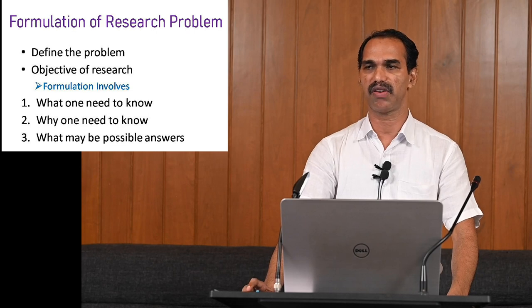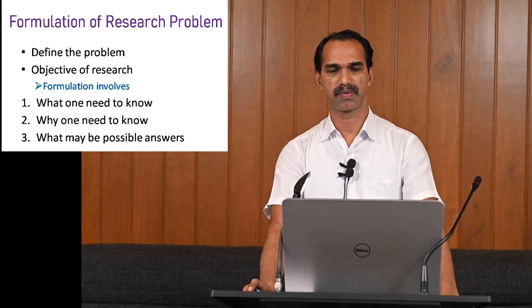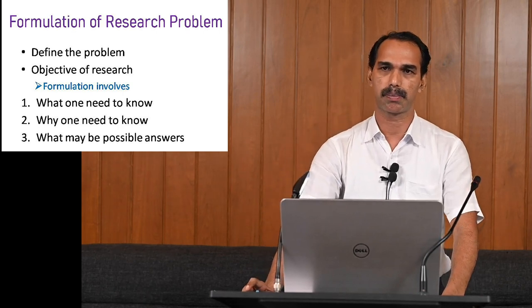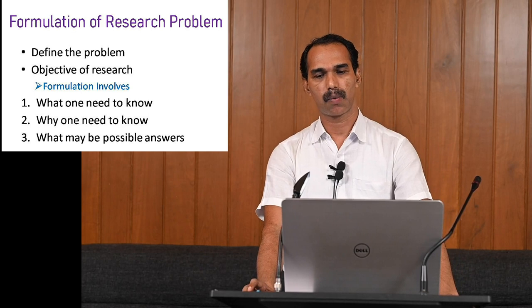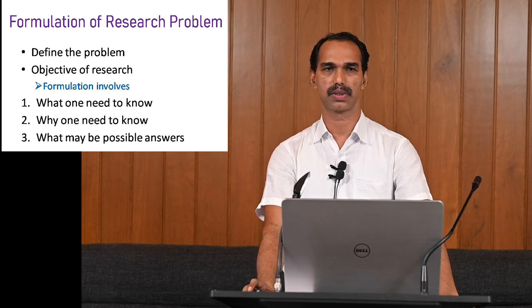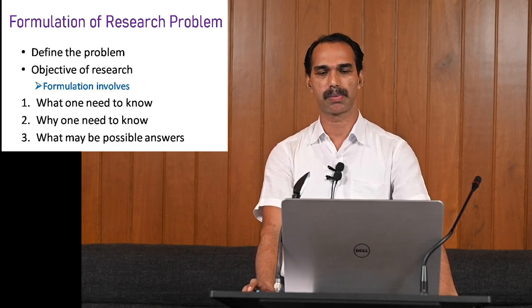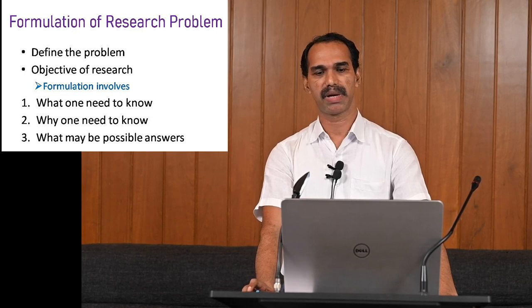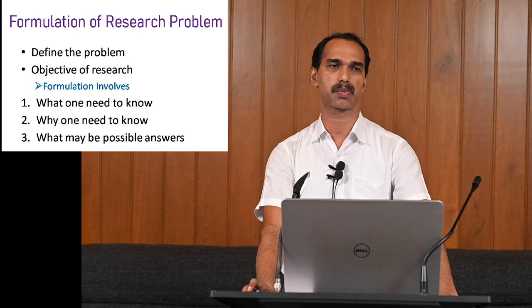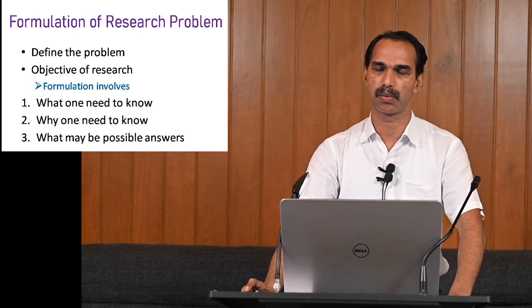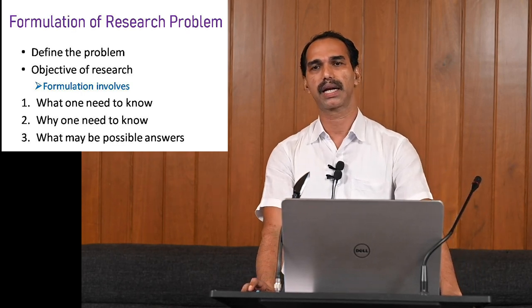Merton says that while formulating a problem, you should keep three questions in mind. First: what does the researcher need to know? Second: why does the researcher need to know? And third: what are the possible answers for the research questions? By keeping these three questions in mind, one has to define the problem and explain the objective of the research, so that the problem is formulated and the focus is clear.